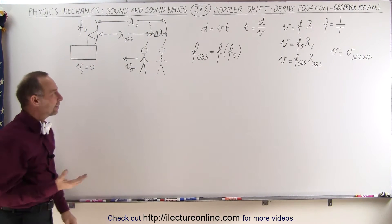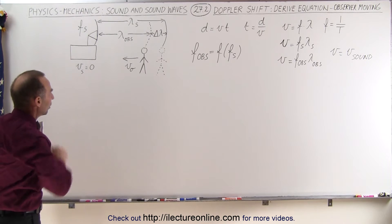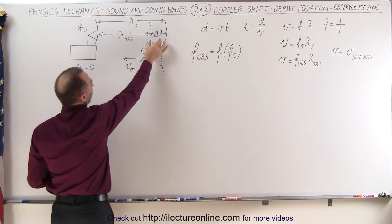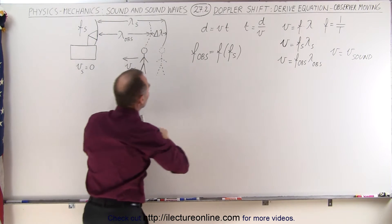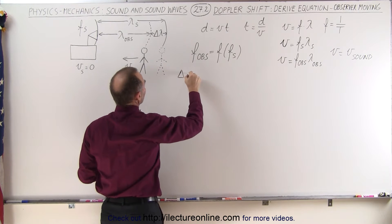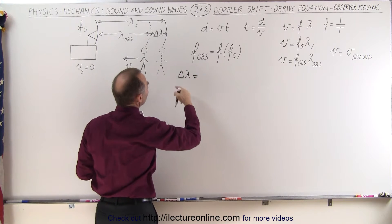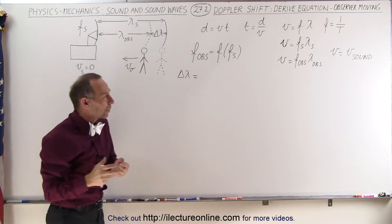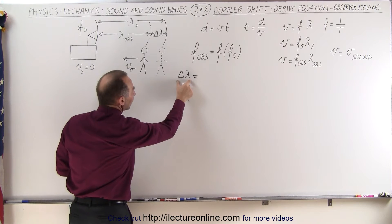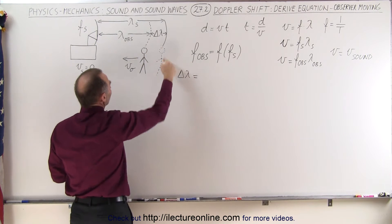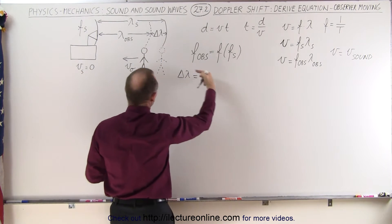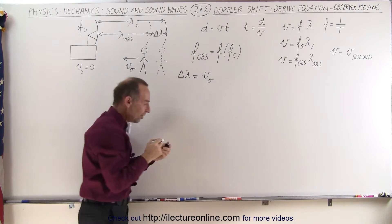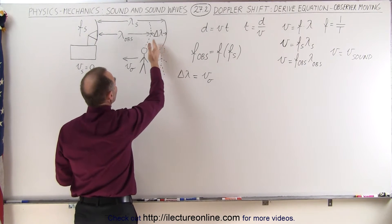So how do we find an equation relating the observed frequency to the source frequency? We need to define this distance — the delta wavelength. Using distance equals velocity times time, the delta wavelength is going to equal the velocity of the observer, because the observer is moving towards the sound, times the time it took the observer to travel that distance.